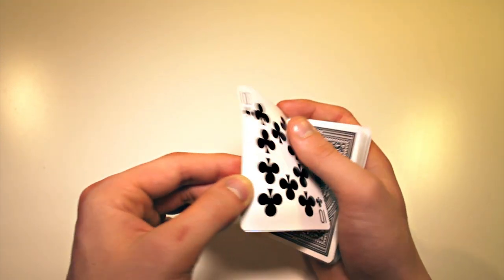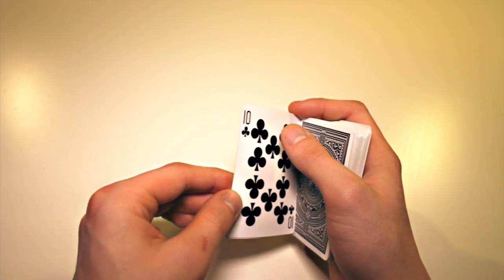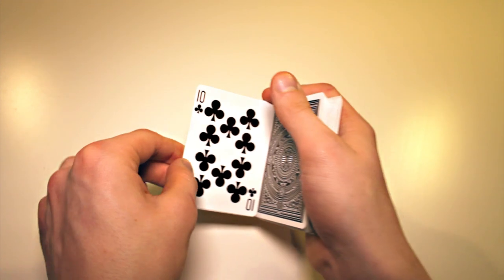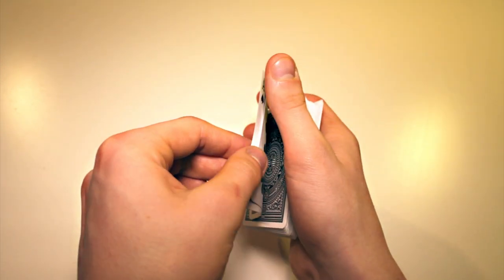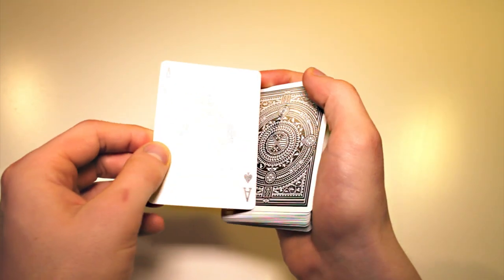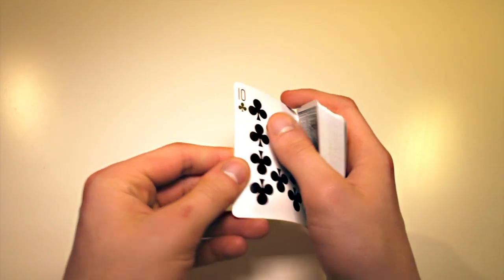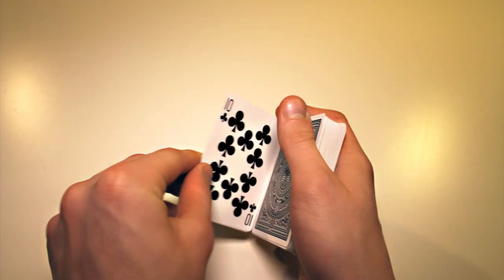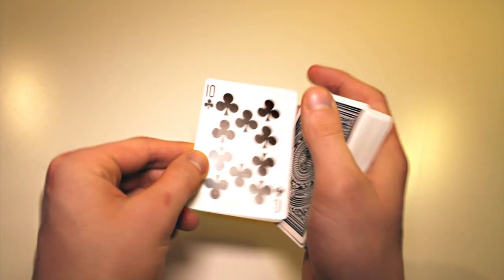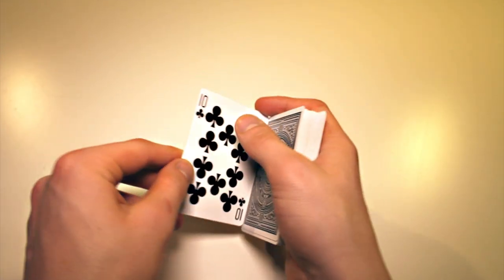You do this about two times, and then on the third time, you are going to let the card go. So, it looks like this. Just like that. Sometimes, I do it like this, and sometimes, I go way more down, just like that, to cover most of the card.